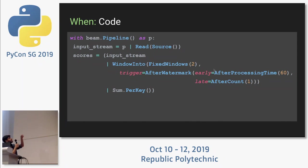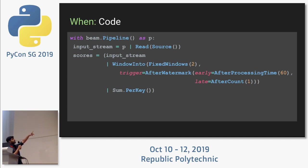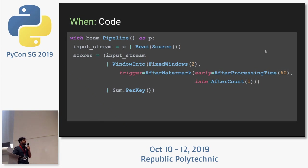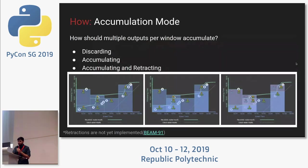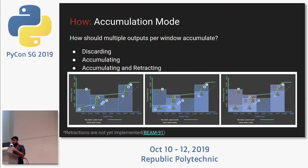Here is what the code looks like — the trigger is defined after the watermark has completed and then we define the firings for it. Note this is pseudocode — you will still need import statements and other boilerplate. Apache Beam has really good documentation and code examples. The fourth question is 'how' — when we have late data and need to materialize results, how do we relate those materializations?